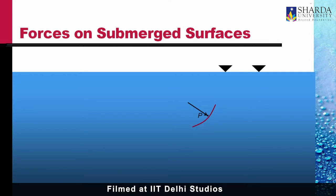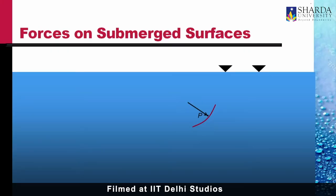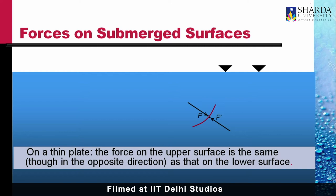Consider a thin curved plate shown in red, submerged in a liquid. On the upper surface there would be a pressure P, and at a point directly below on the lower surface there would be a pressure P prime. Both pressures are equal to rho g h, where h is the depth from the free surface. Therefore, on a thin plate, the force on the upper surface is the same, though in the opposite direction, as that on the lower surface.